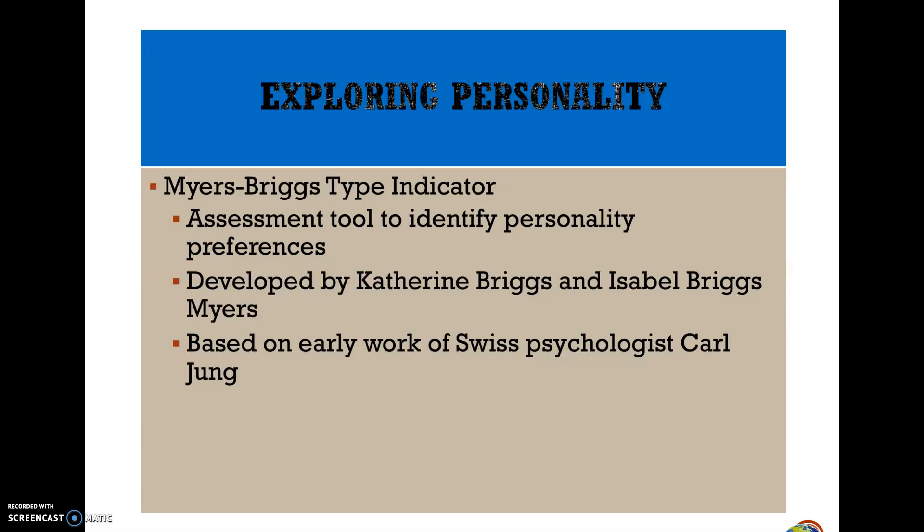The personality type indicator is the Myers-Briggs. I recommended that you get the package, but if you didn't, that's okay — you have the tool on the activity that you can complete. This will be time now that you'll be able to open up your Myers-Briggs Type Indicator package and begin doing that, so it will help you with your personality paper due next week. It was developed by Katherine Briggs and Isabel Briggs Myers, based on early work from Swiss psychologist Carl Jung.